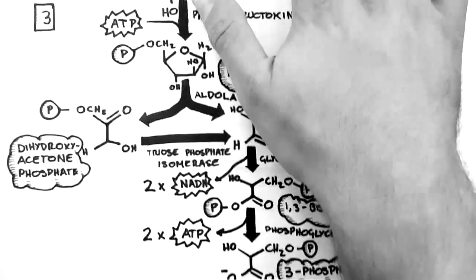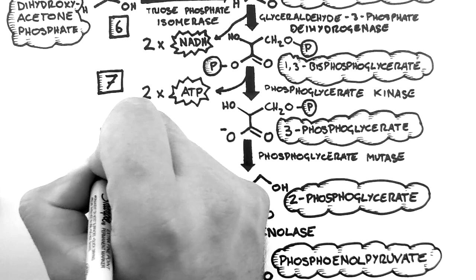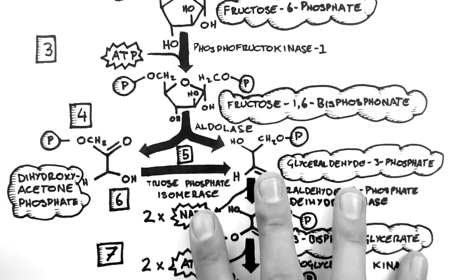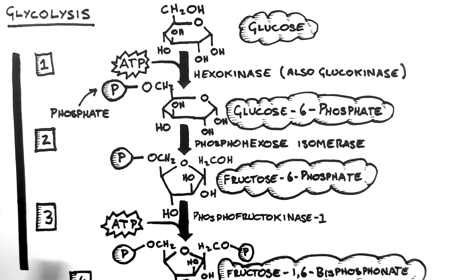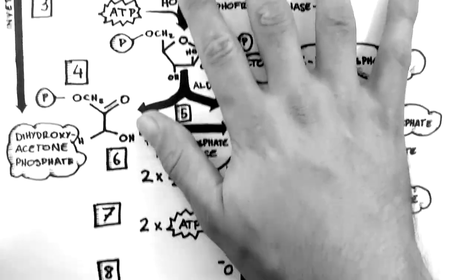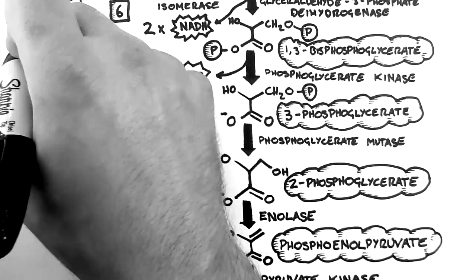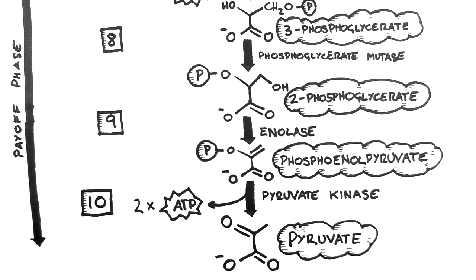Now for your reference I shall quickly number these steps and you can see that there are 10 steps in total. Steps 1 to 5 are often referred to as the investment phase because they use up ATP. Steps 6 to 10 are known as the payoff phase because we get back our initial 2 ATP investment, plus 2 additional ATP and 2 NADH which will later become even more ATP.